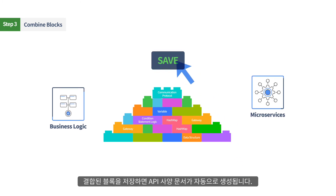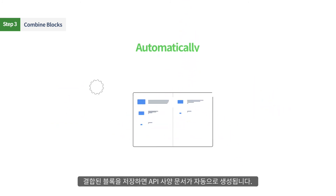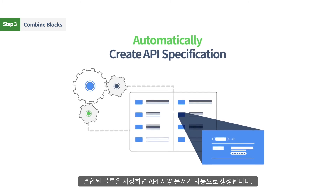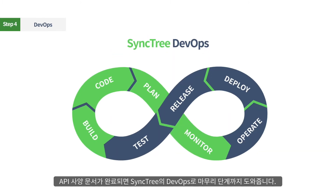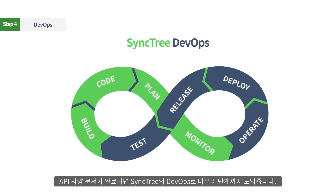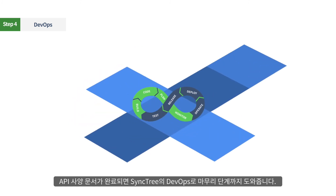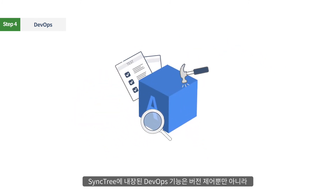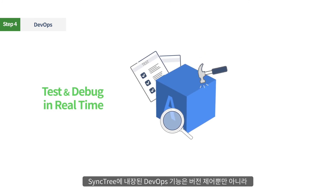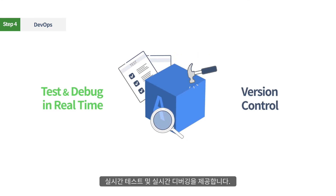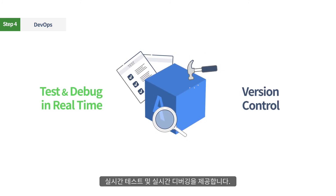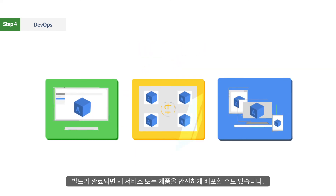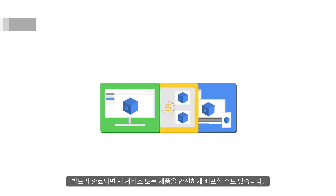Once you save your combined blocks, the API specification document is automatically created. After getting the API specification document, SyncTree's DevOps will help you through the final steps. Our built-in SyncTree DevOps provides real-time testing, real-time debugging, as well as version control. When you complete your build, you can also safely deploy your new service or product.